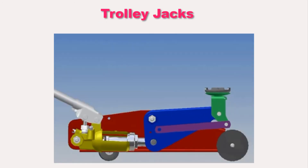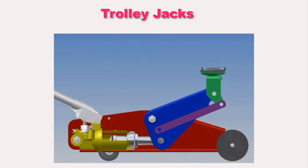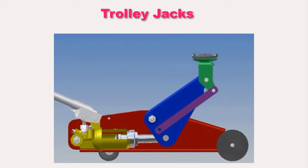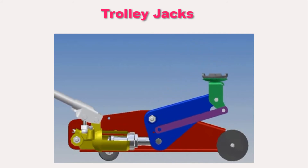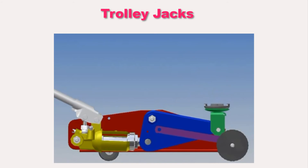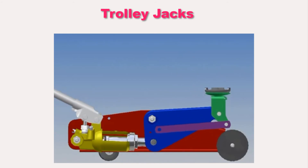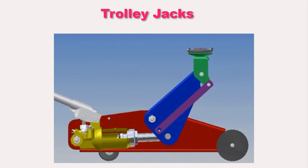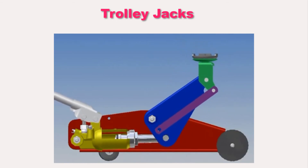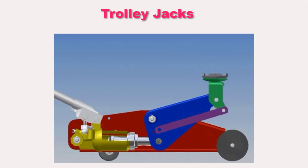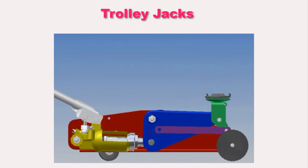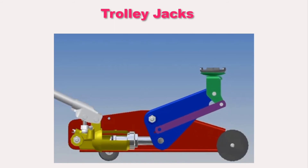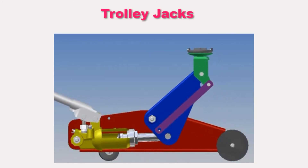Trolley jacks. The trolley jack is a safer, more stable, and quicker option and is the choice of many professional mechanics. The wheels mean you can roll it into position easily, but before you do, make sure the little lever is turned to the right, which you can do using the end of the handle. Then insert the handle and pump it until the cradle reaches the jacking point. To lower it back down, take the handle out and twist the little lever anti-clockwise, taking care to do so steadily to lower the car slowly.